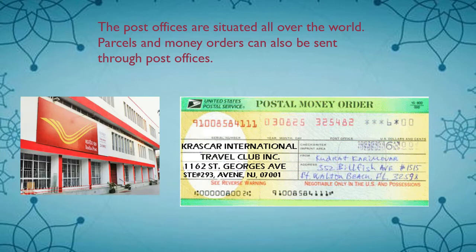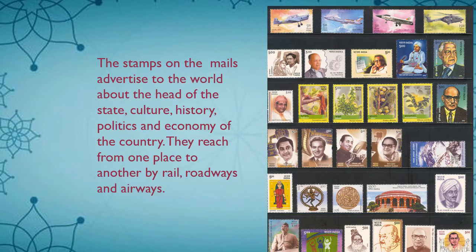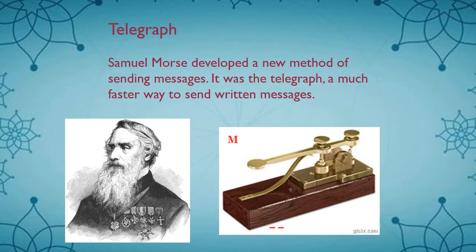What is a money order? If someone sends you a money order of 1,000 rupees, you can go to the bank and get it deposited to your account. The stamps on the mails advertise to the world about the head of state, the culture, history, politics, and economy of the country. These stamps help the post reach from one place to another by railways, roadways, or airways. The main purpose of postage stamps is to provide evidence that the sender has paid for the postal services. These postal stamps are issued at the post office.